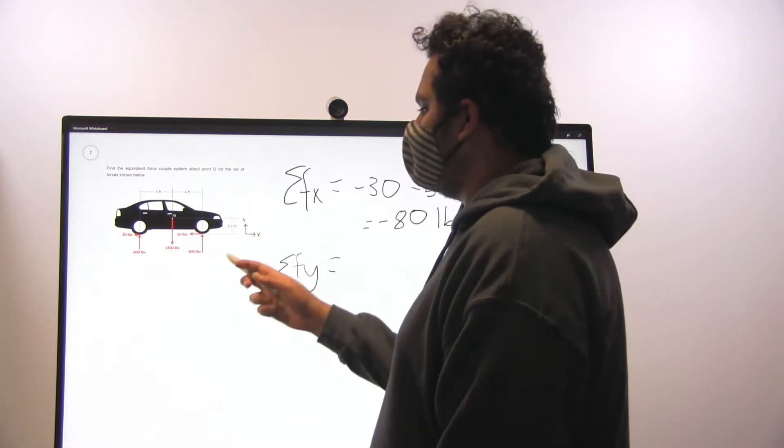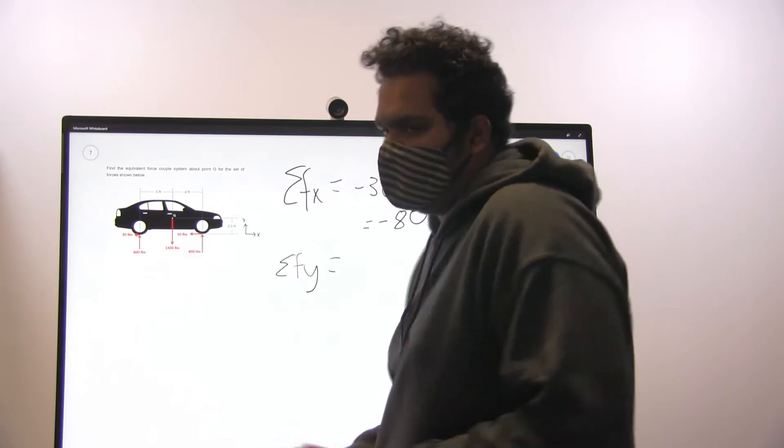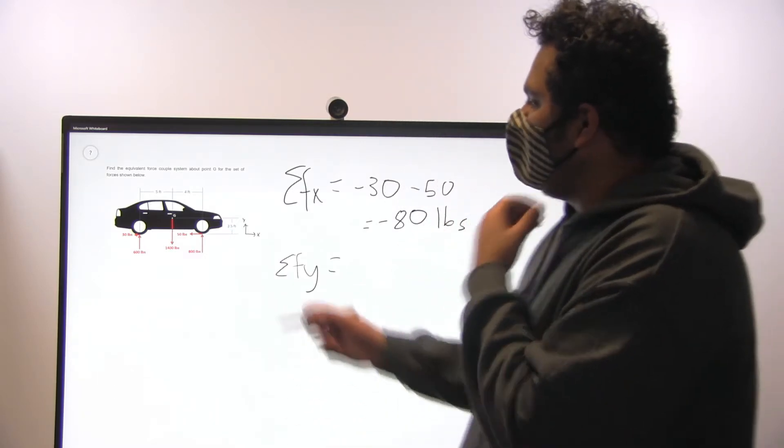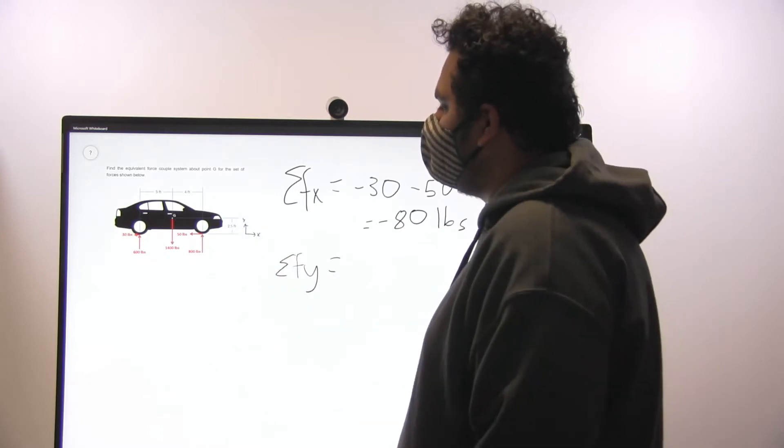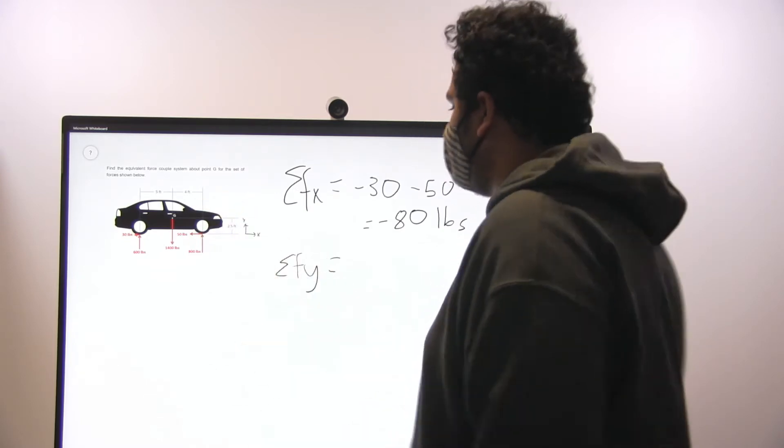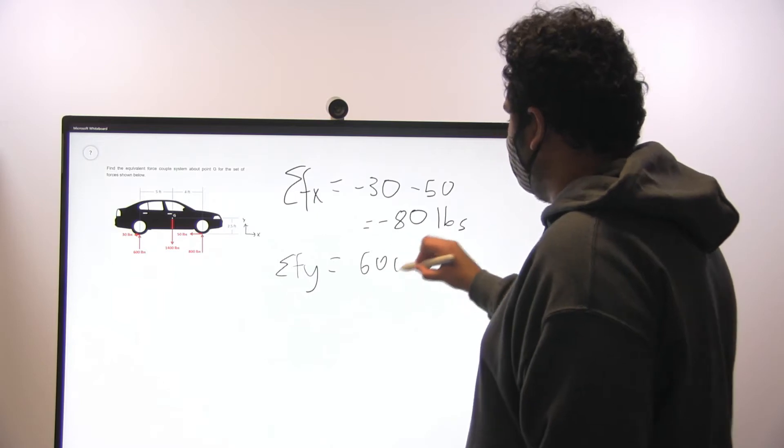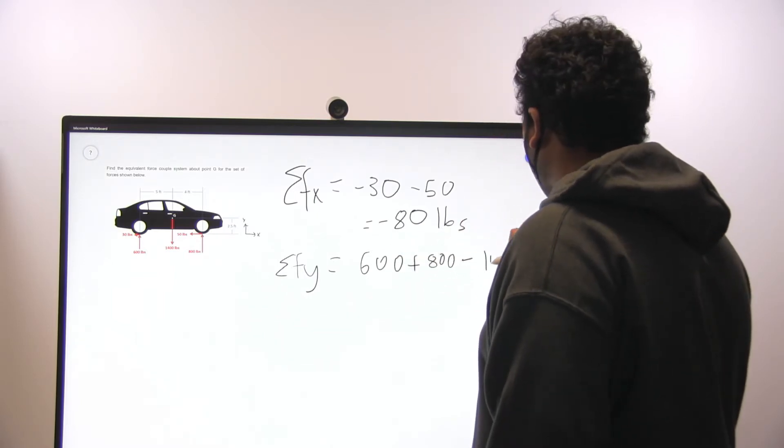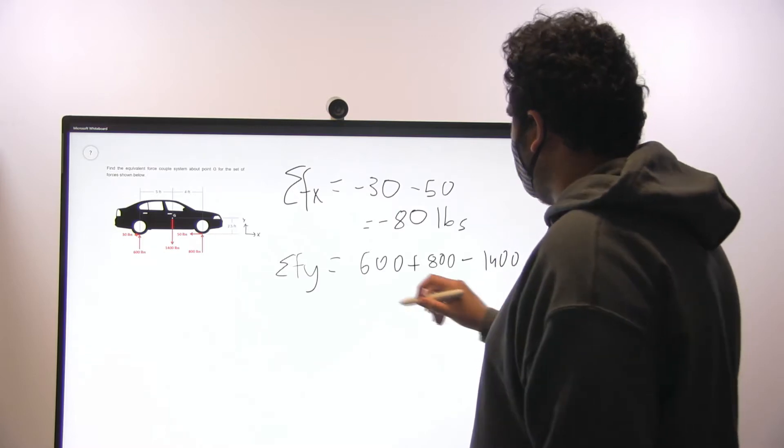Sum of forces in the y direction: positive 600, positive 800, which are the reaction forces from the ground on the car, and the weight of the car itself is negative 1400 pounds. So it's going to be 600 plus 800 minus 1400, and this is going to come out to be zero pounds.